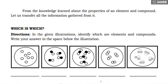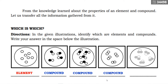In the given illustration, identify which are elements and compounds. Number one is an element. Number two is a compound. Number three is a compound. Number four is also a compound. And the last one is also a compound.